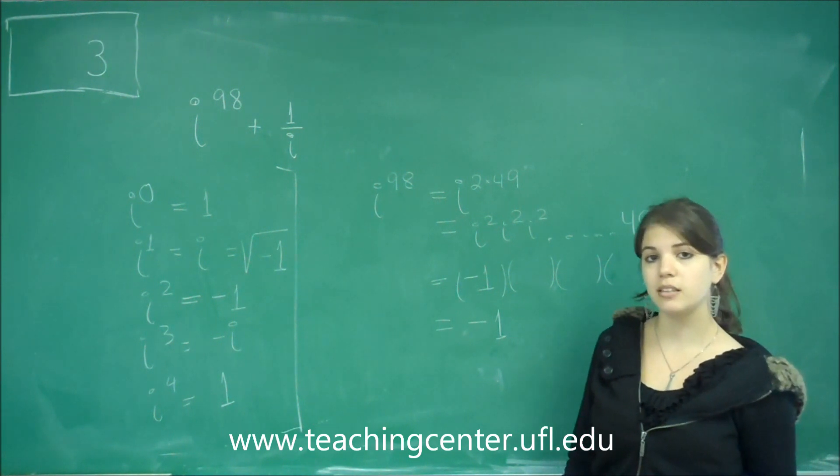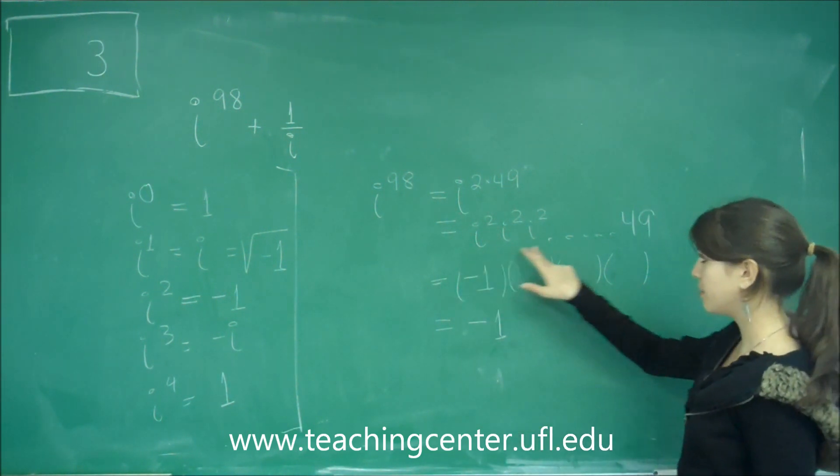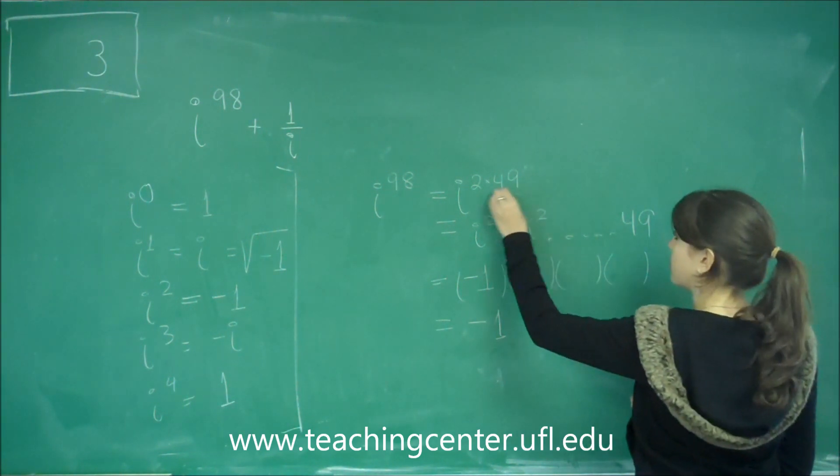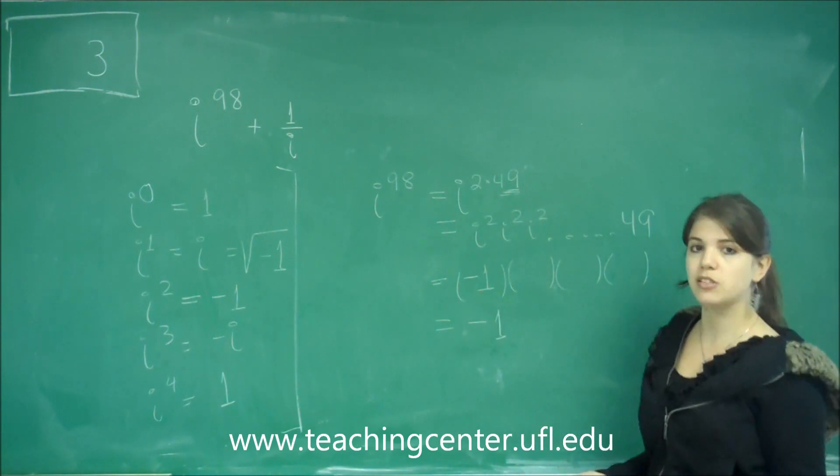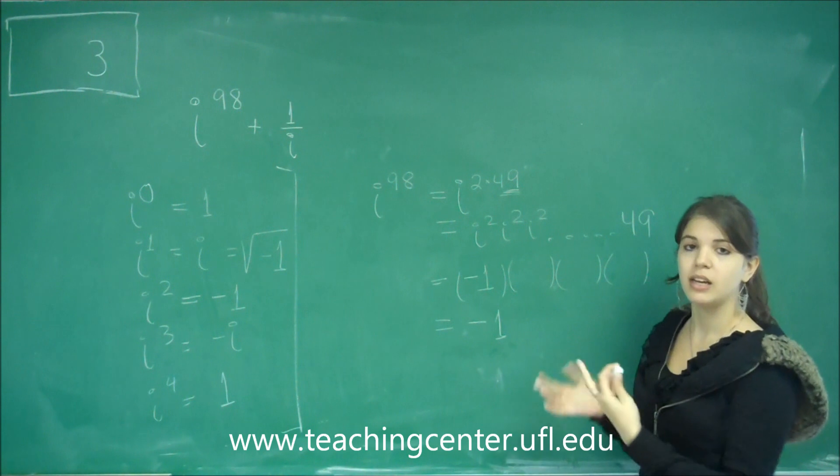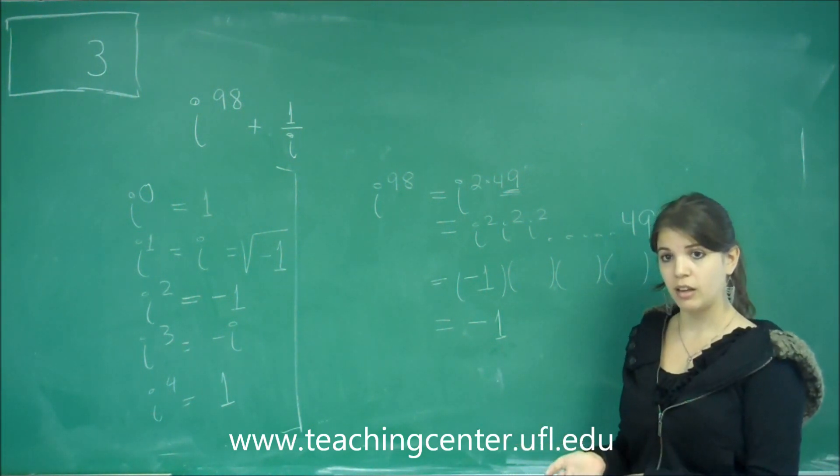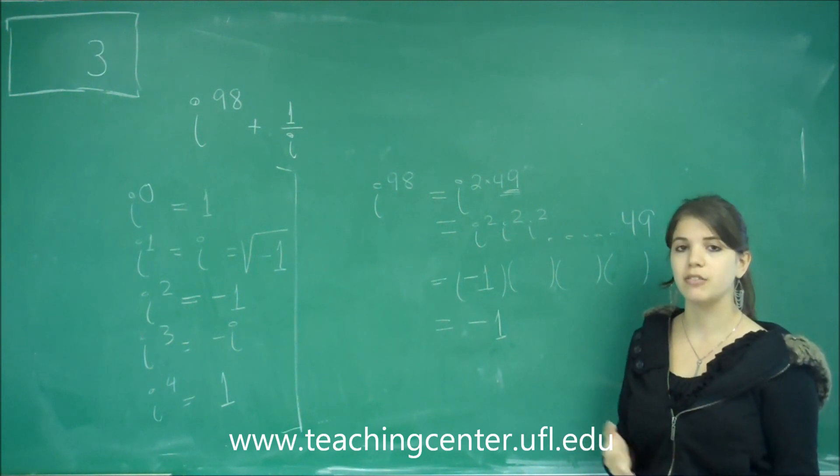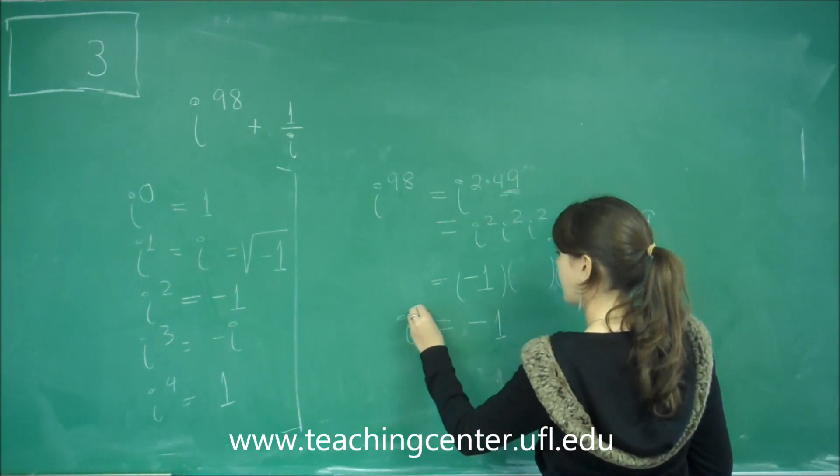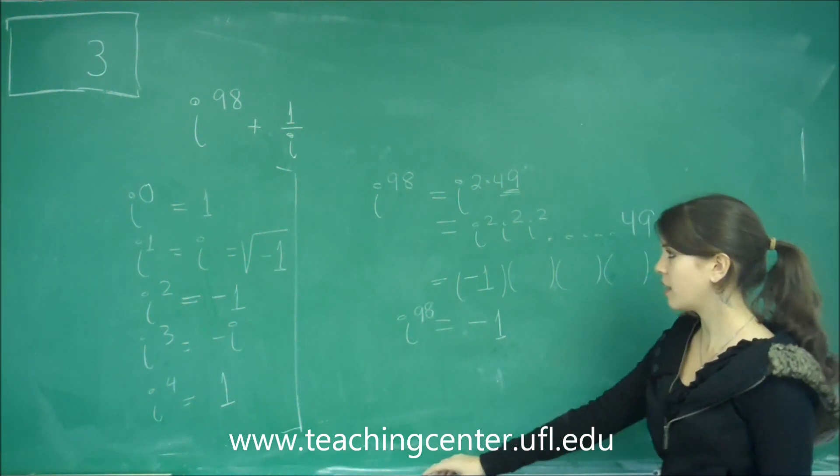So just keep in mind the pattern. You can write it out like this if you want to visualize it. And also remember that this number is actually important. It also tells you if it's odd or if it's even if your final answer is going to be positive or negative. So here, i to the 98th ends up being just negative 1, and we have just simplified that.